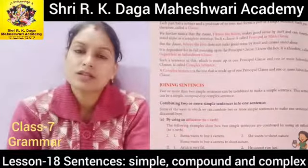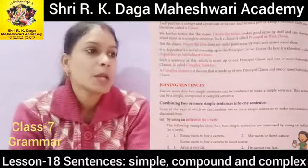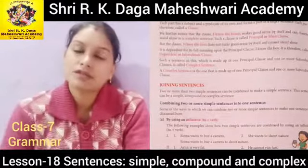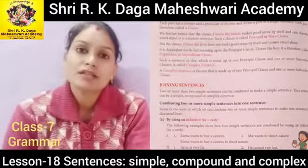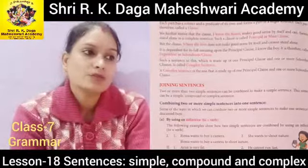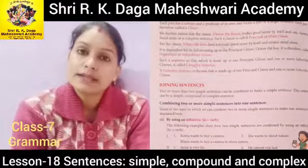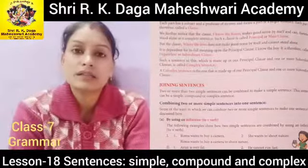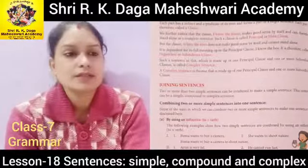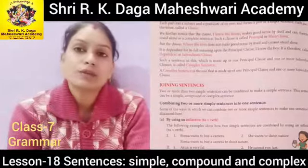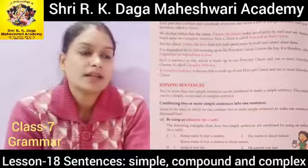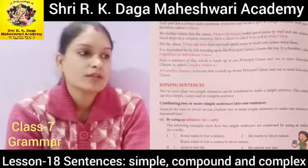Such a clause is called a principal or main clause. But the clause 'where she lives' does not make good sense by itself and cannot stand alone. It depends for its full meaning upon the principal clause, so we cannot call it an independent clause. It is therefore called a dependent or subordinate clause. A sentence which is made up of one principal clause and one or more subordinate clauses is called a complex sentence.